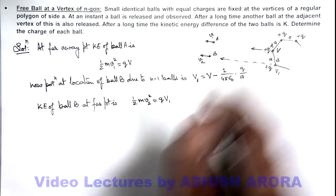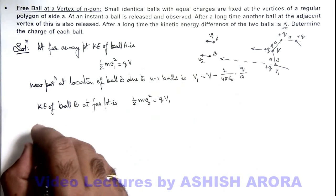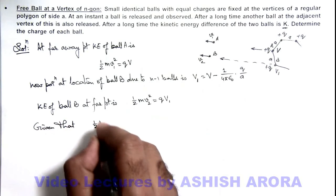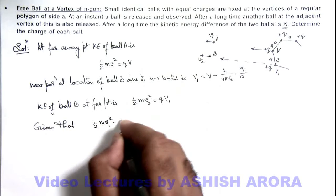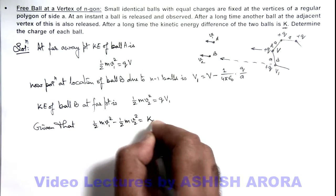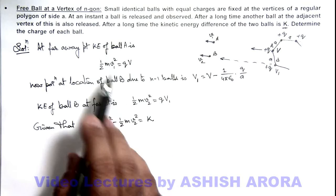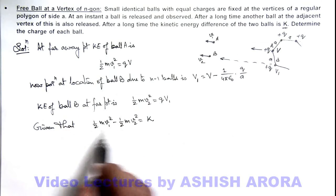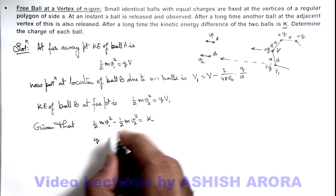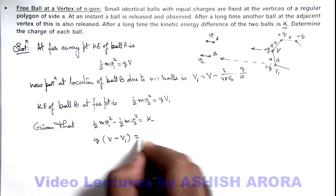So we can write given that ½mv₁² - ½mv₂² is equal to K. So here if we subtract these two, you can see the value of ½mv₁² - ½mv₂² I can write as q times this is v - v₁, and that is equal to K.